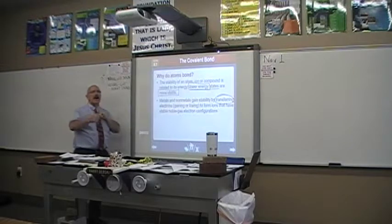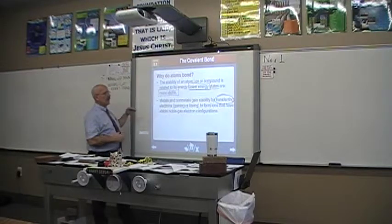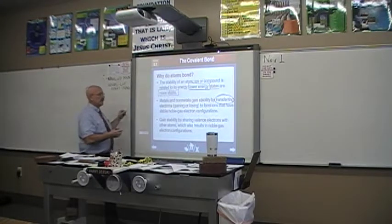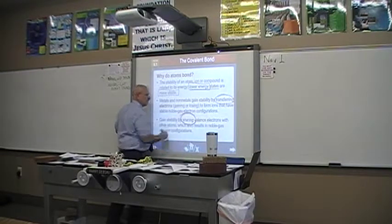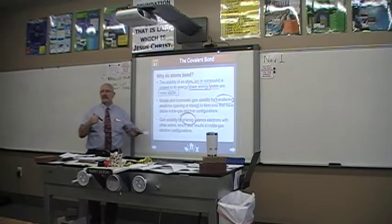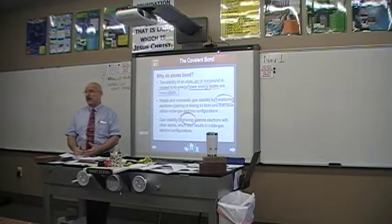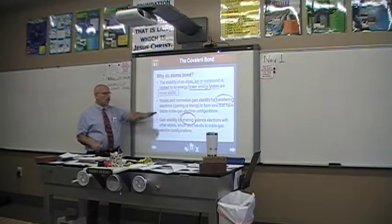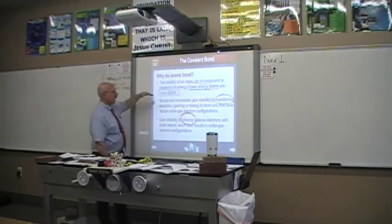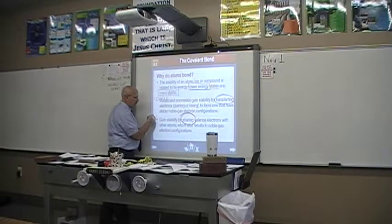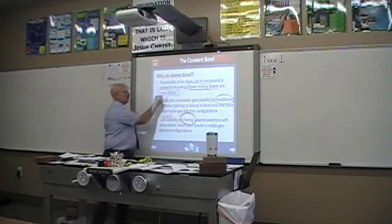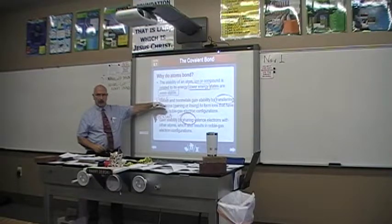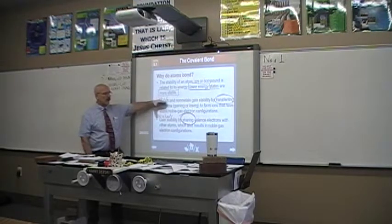What we're studying in chapter eight is the other way this happens - not by transferring of electrons and not by ions. We can gain stability a second way: by sharing. Sharing of valence electrons which results in noble gas configurations. Noble gas configurations are the most stable in all of chemistry. Every atom wants to have eight electrons in its outer shell. We can do it one of two ways: either through ions or through sharing, either through transfer or by sharing, either through ionic or through what we call covalence.